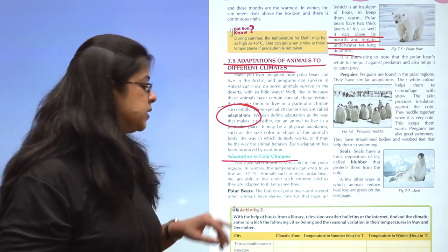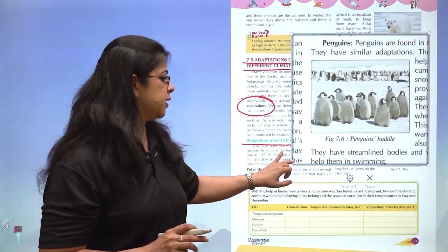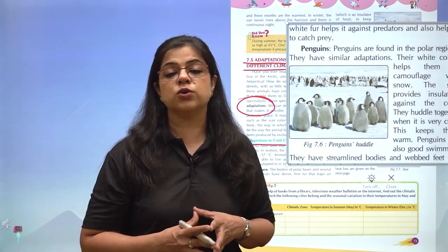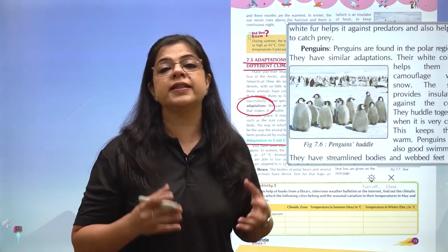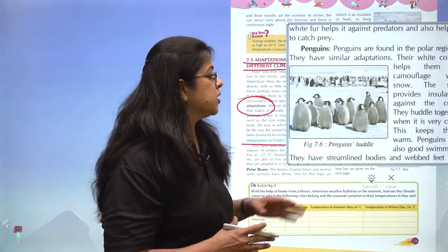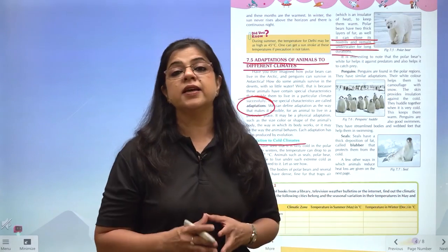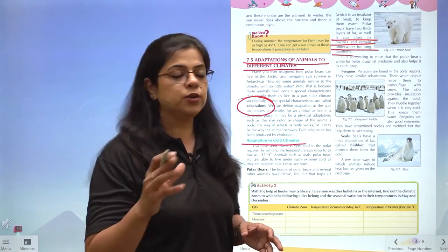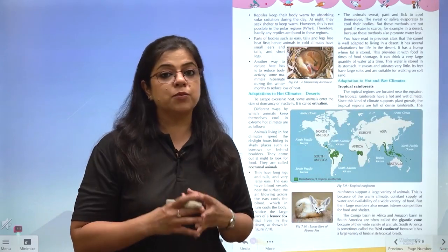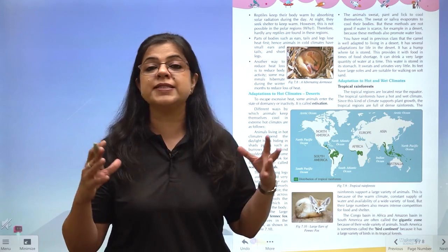Coming to penguins - they are animals of the polar region. Penguins live in groups; groups mein rehne se aapas mein ek dusre ki warmth se they can survive the cold climate. They are also white in color, which helps in camouflage. They are also very good swimmers; swimming achi honi ki wajah se they are able to go deep into the water to catch food. Because cold climate mein animals kam hongi, toh food bhi kam hogi. So that is the reason they need to develop these special skills.